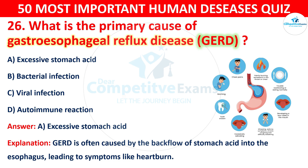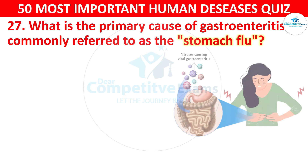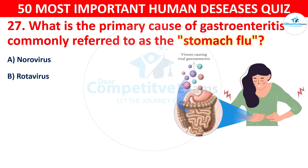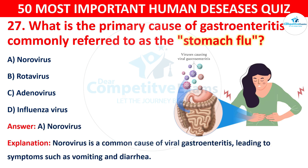Question 27: What is the primary cause of gastroenteritis, commonly referred to as the stomach flu? Your options are: A) Norovirus, B) Rotavirus, C) Adenovirus, or D) Influenza virus. The correct answer is A — norovirus. Norovirus is a common cause of viral gastroenteritis, leading to symptoms such as vomiting and diarrhea.